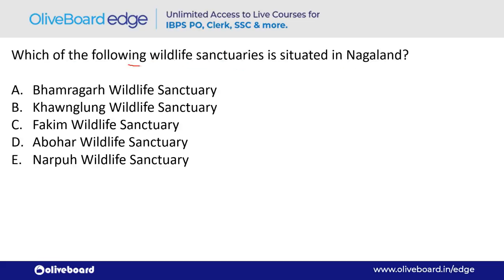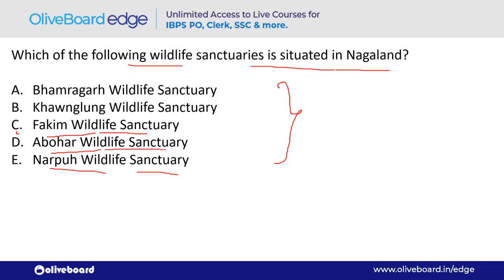Which wildlife sanctuary is situated in Nagaland? The answer is Paktim Wildlife Sanctuary. Remember: Narpu Wildlife Sanctuary is in Meghalaya, Abohar Wildlife Sanctuary is in Punjab, Kwanagalung Wildlife Sanctuary is in Mizoram, and Bhamragarh Wildlife Sanctuary is in Maharashtra.